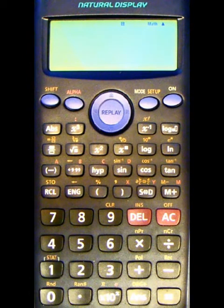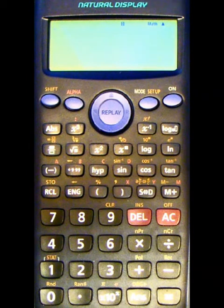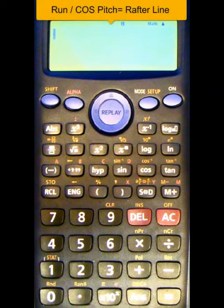So for this last example, we're going to get the true line distance for a common rafter, which is the hypotenuse of a right angle triangle. The formula is run divided by the cosine of the pitch, and you hit equals, and that will be the true line distance for your rafter line.